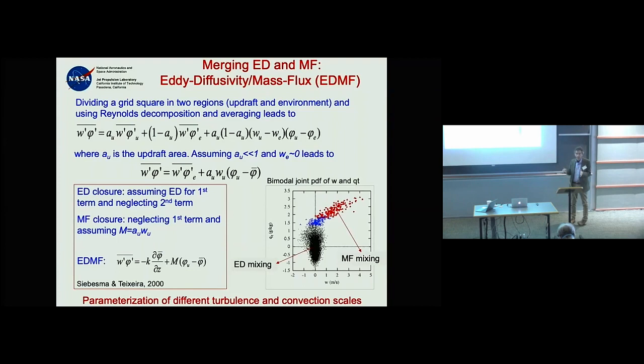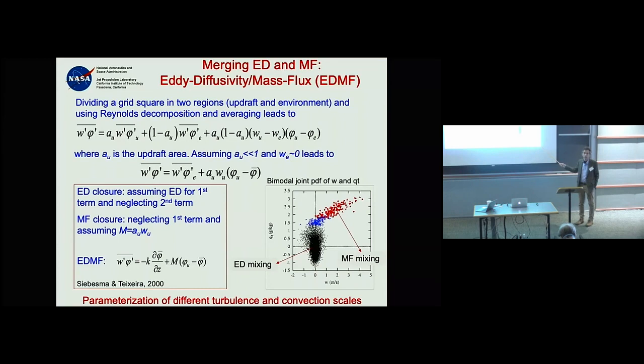For properties like the moist conserved variables θ_L and Q_T, you use an entraining plume model where lateral entrainment controls mixing between the plumes and the environment. There's a similar equation for kinetic energy, with the key difference being a buoyancy source term — phase transitions generate buoyancy that makes the plumes very active and energetic.